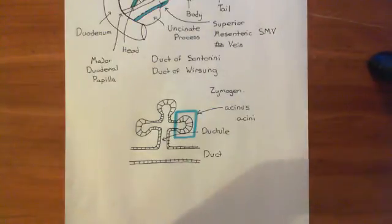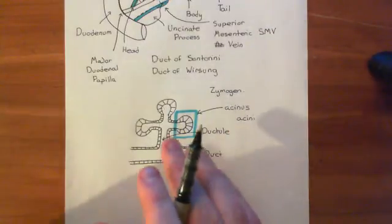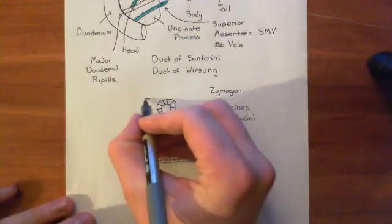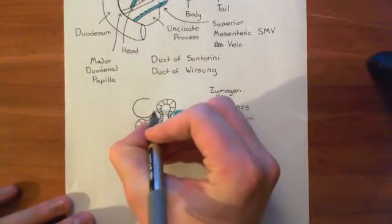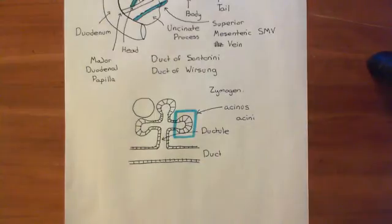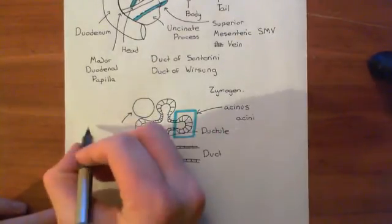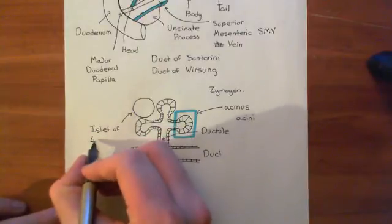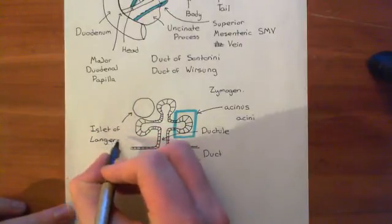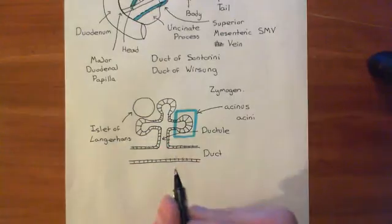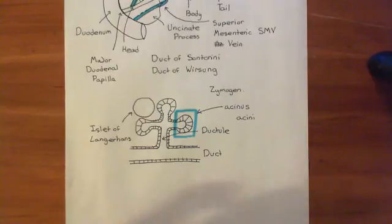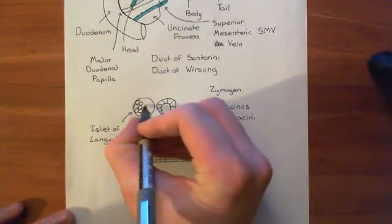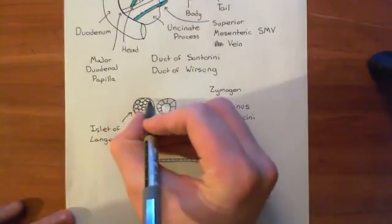That's the exocrine pancreas — but dotted in amongst this great meshwork that is the exocrine pancreas, you have other cell types. You'll have a little ball of cells dotted in amongst this portion of exocrine pancreas. This is what's known as an islet of Langerhans. 'Islet' means island, and Langerhans is who discovered them. These are little islands amongst all of the exocrine pancreatic cells, and these are going to be the endocrine pancreas. They will be secreting their products into blood vessels.